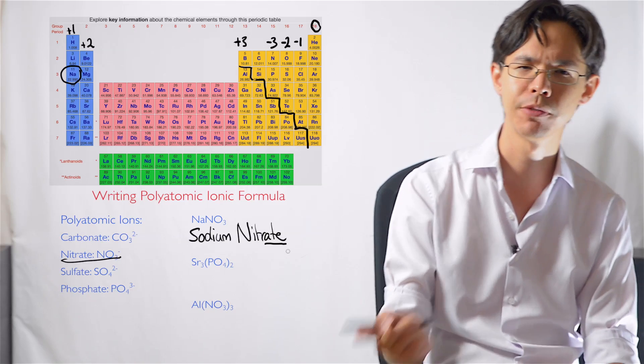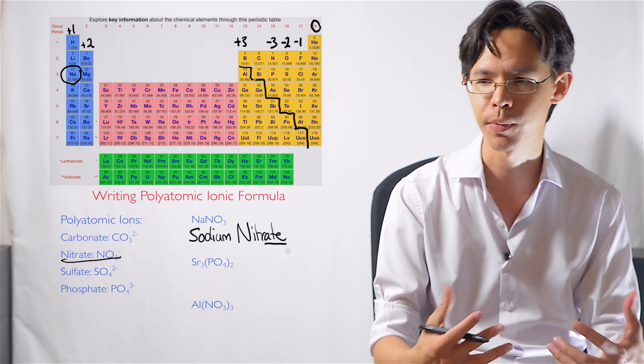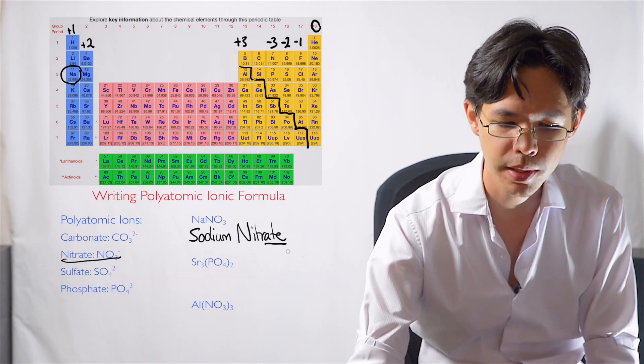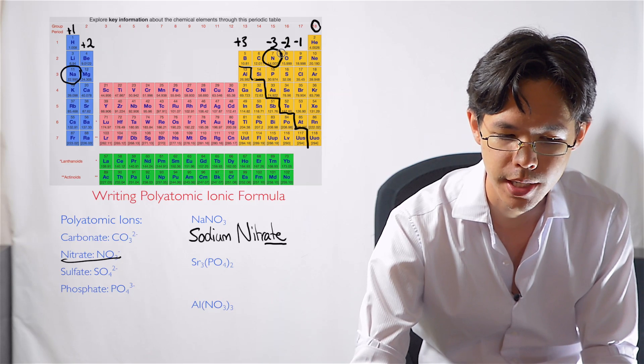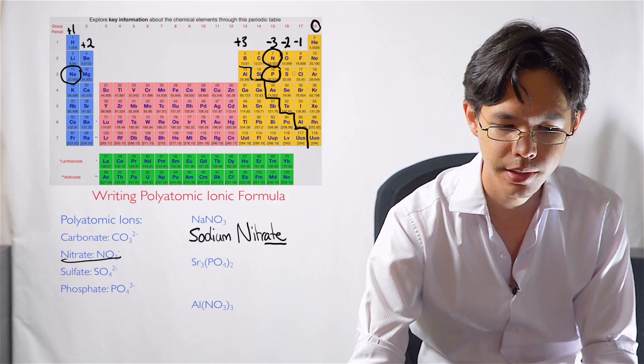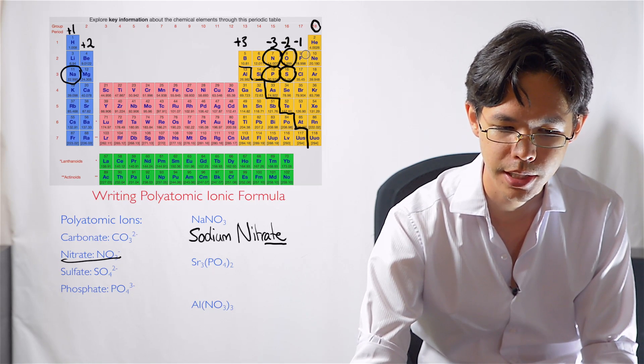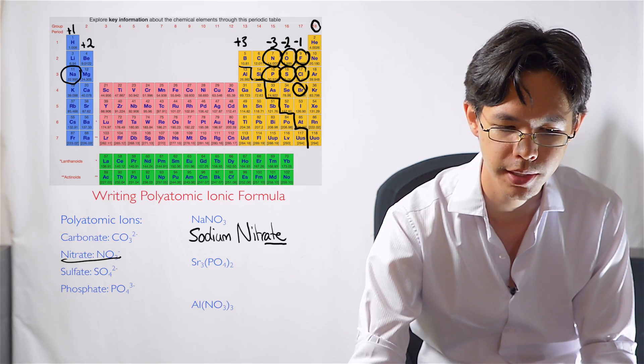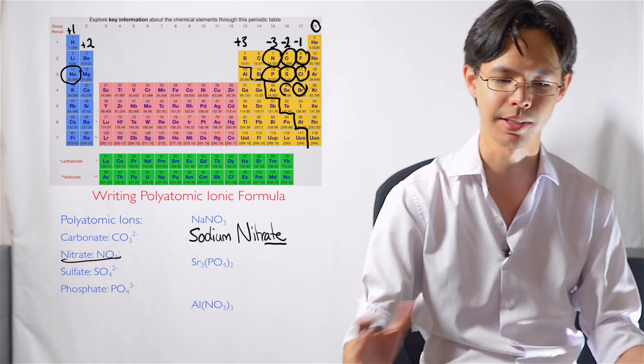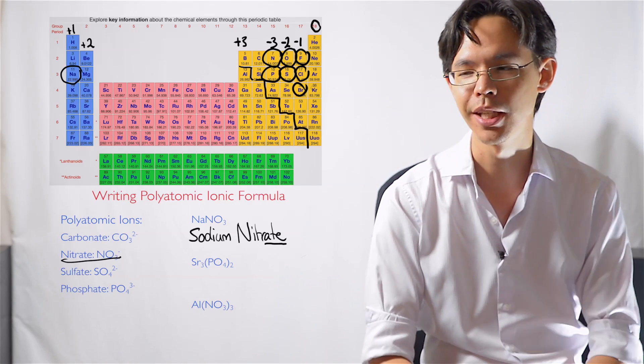The only case where it's not a polyatomic ion is when you've got -ide. Remember the examples we had before in the previous video for binary ionic compounds? So this will be things like nitride, phosphide, sulfide, oxide, fluoride, chloride, bromide, selenide. But you get the point. If it's -ide, you know instantly it's a singular, it's a monoatomic ion.